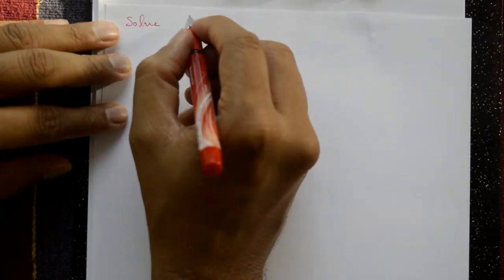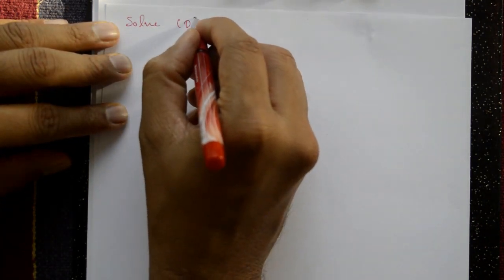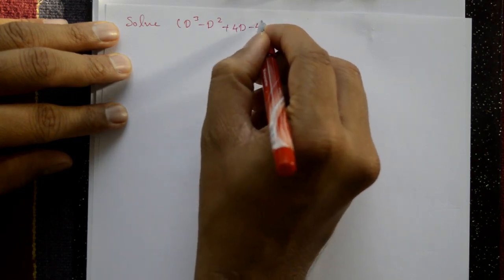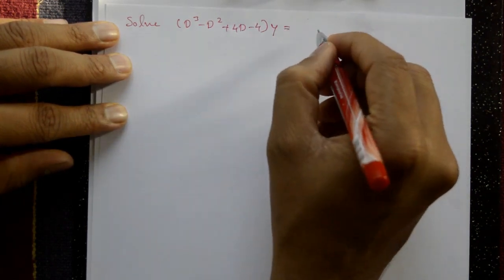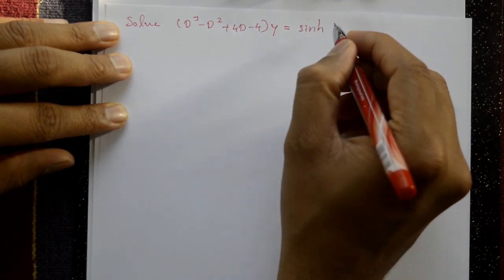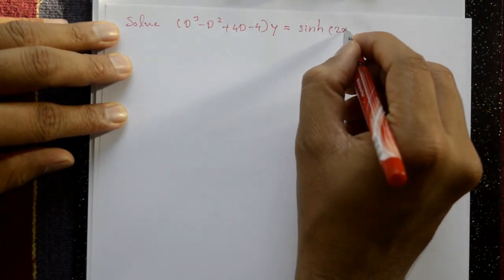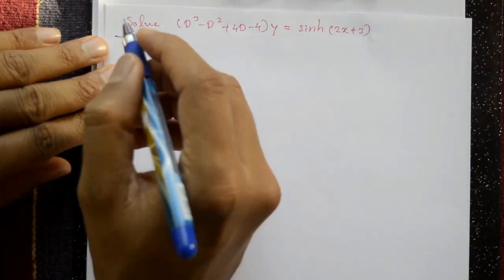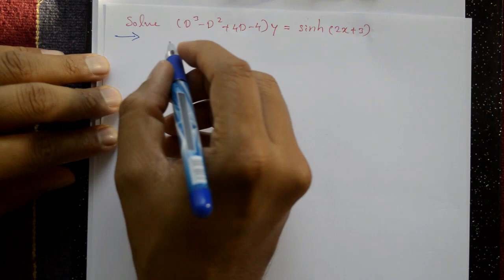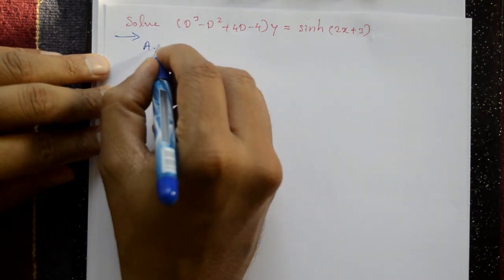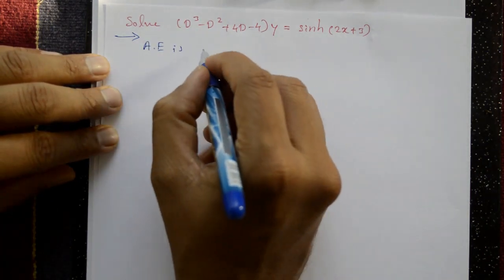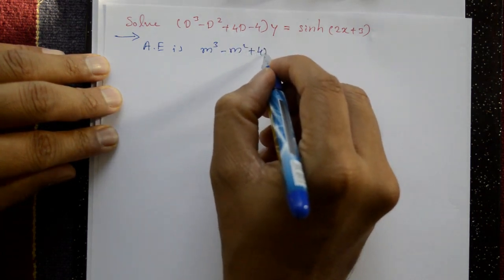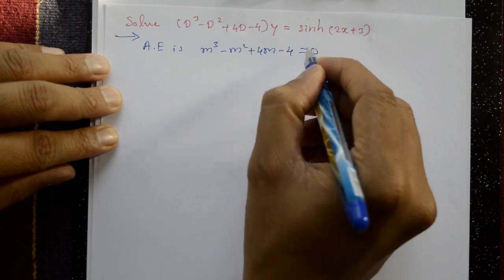Next example: solve (D³ - D² + 4D - 4)y = sinh(2x + 3). Find the complete solution. The auxiliary equation is m³ - m² + 4m - 4 = 0.